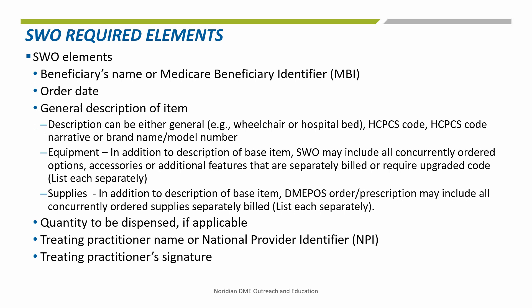Here are the elements of the SWO — this is the only order that is needed. There is the option to use the beneficiary's name or their Medicare Beneficiary Identifier, or MBI. The order date will be the date the request was communicated to the supplier. A general description of the item, options, accessories, or supplies can be listed on the same SWO or on a separate one, but there will need to be an order for everything that is billed to Medicare.